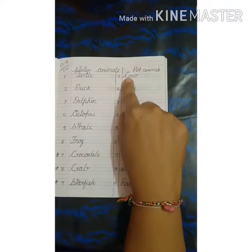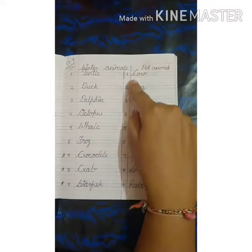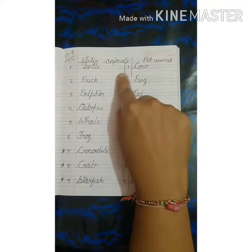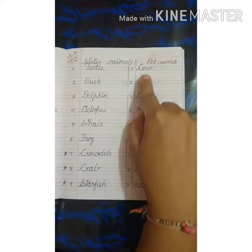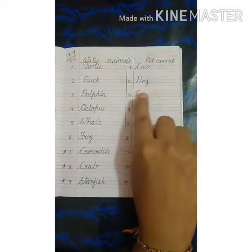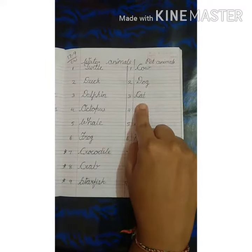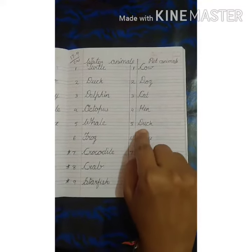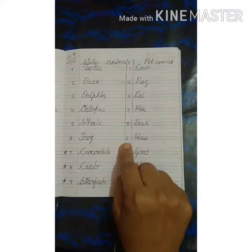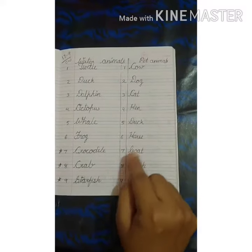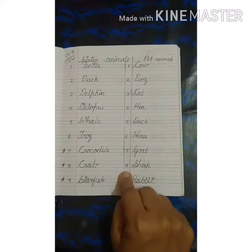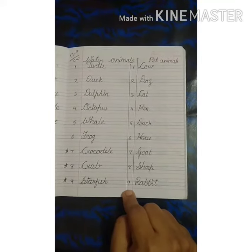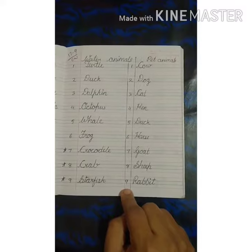Now on the other side, draw a line and write down the numbers. Give the title: pet animals. First one COW, second one DOG, third one CAT, fourth one HEN, fifth one DUCK, sixth one HORSE, seventh one GOAT, eighth one SHEEP, ninth one RABBIT.